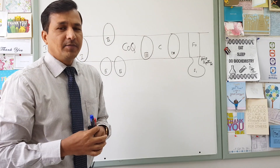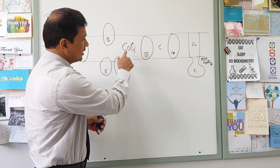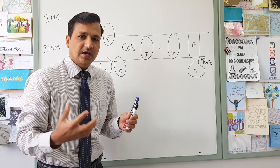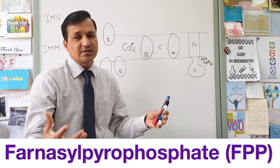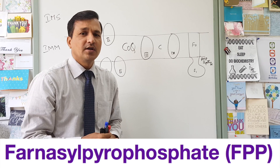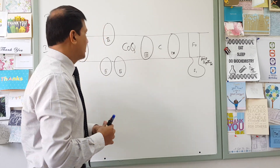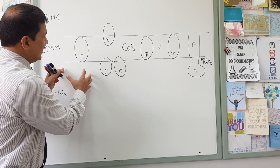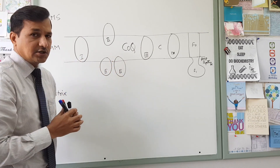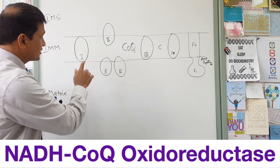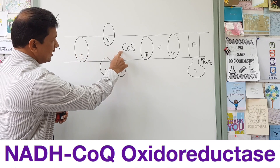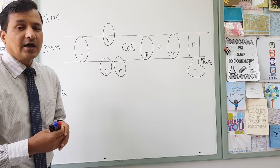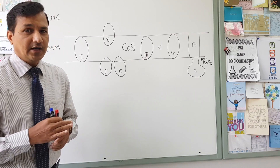Both coenzyme Q and cytochrome C are mobile complexes. Note that coenzyme Q is derived from farnesyl pyrophosphate, which is an intermediate in the cholesterol biosynthesis pathway. Complex 1 is also called NADH coenzyme Q oxidoreductase because Complex 1 donates electrons to coenzyme Q.